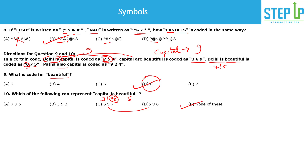We covered around 10 questions introducing 10 different types of coding-decoding problems. If you go through this variety and practice 50–100 questions, you'll be so comfortable you can solve them in 10 seconds. In the exam, don't spend more than a minute — if you can't figure it out in 10–30 seconds, move on. Thanks for watching, and see you in the next video.